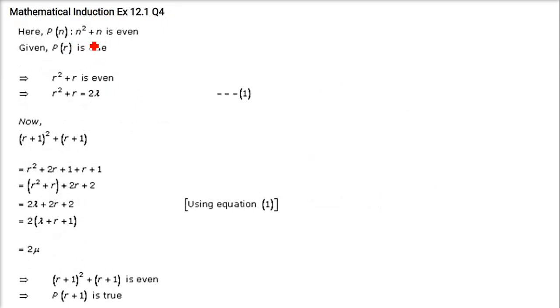Now P(n) is n square plus n is even. So if P(r) is true, then P(r+1) is also true. This we have to prove. Even numbers we always show by 2λ. So for an even number, we just say 2λ or 2k like this. So if r square plus r, if we say that P(r) is true, just put r here. So r square plus r, if it is even, that it is equal to some 2λ, that is multiple of 2.